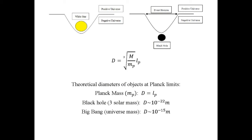A 3 solar mass black hole will condense to a diameter of approximately 10 to the minus 22 meters.